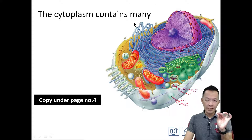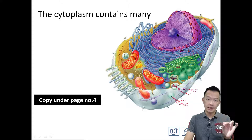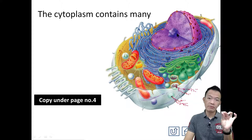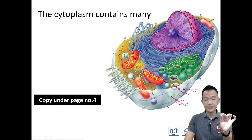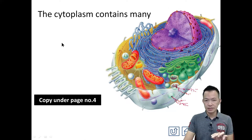So last time in Form 1, our cell contains cytoplasm, cell membrane and nucleus - that's all. Starting from today, we're going to have more and more structures. So inside the cytoplasm of a cell, it contains many organelles.